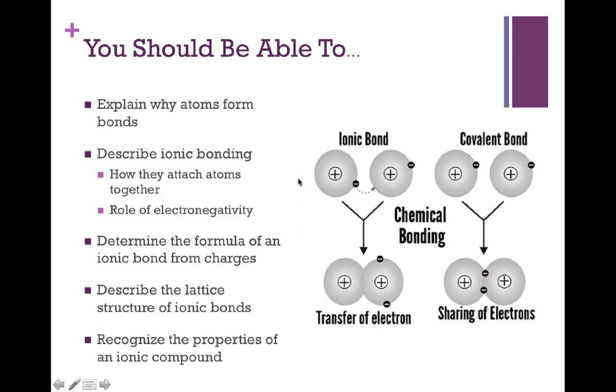So let's wrap things up then. At this point in time, you should be able to do a couple things. You should be able to explain to me why bonds form in the first place, and again, that explanation is going to be consistent for both ionic and covalent. You should be able to describe ionic bonding itself, how the atoms are actually attached together by their positive and negative charges, and the role that electronegativity plays in that.